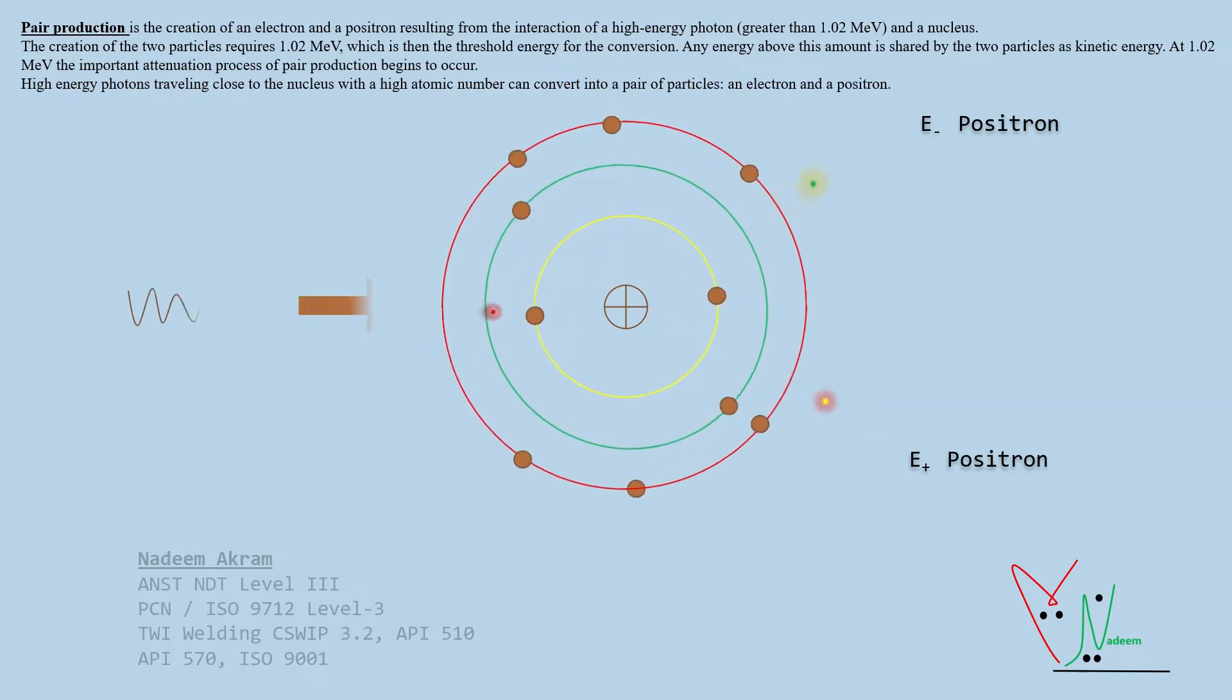High-energy photons traveling close to the nucleus with a high atomic number can convert into a pair of particles, an electron and a positron.